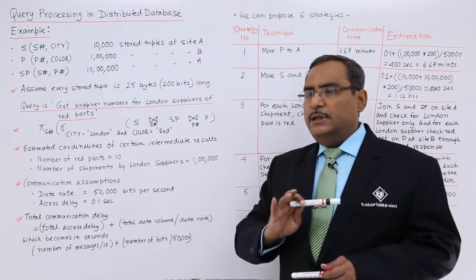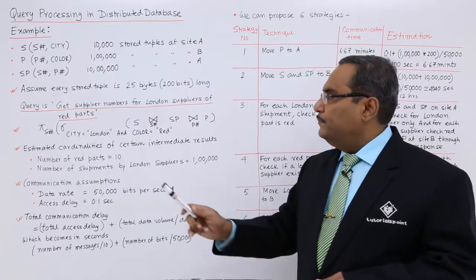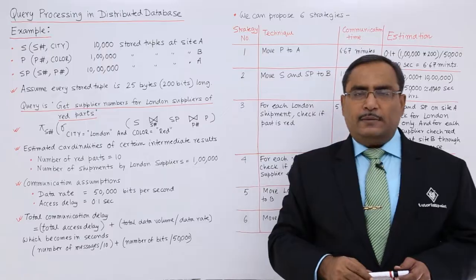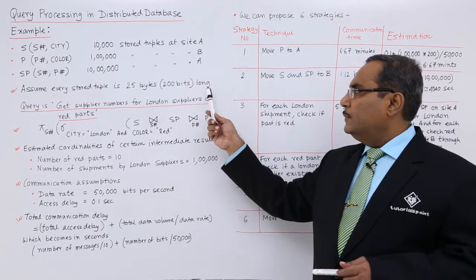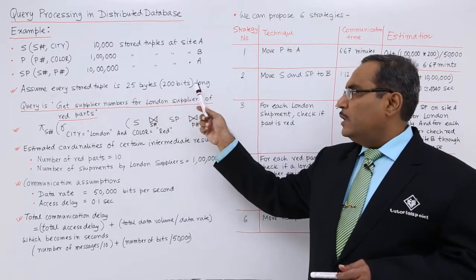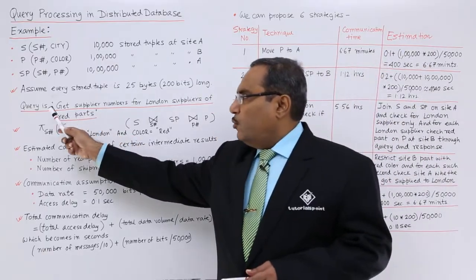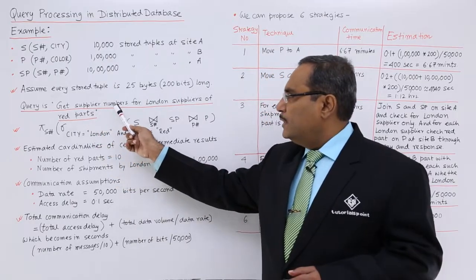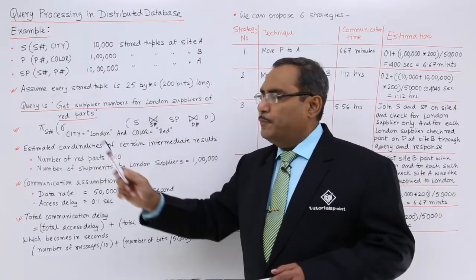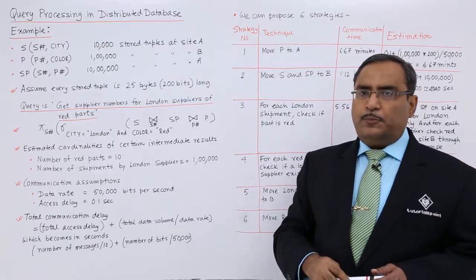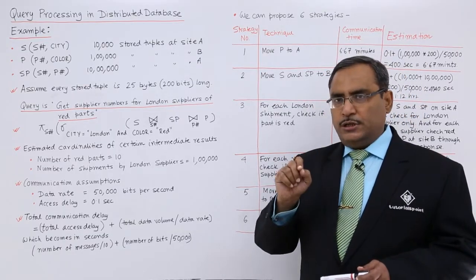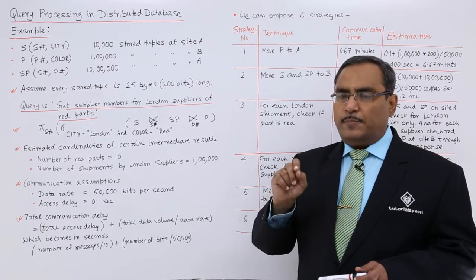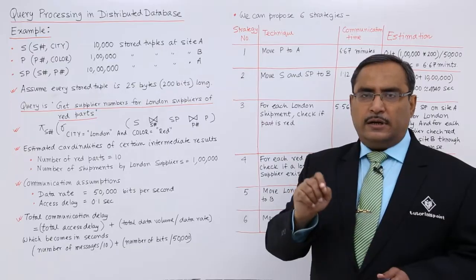We are having three tables distributed at site A and site B. Assume every stored tuple is 25 bytes long, that means 200 bits long (25 bytes × 8 = 200 bits). The query to be processed is: get the supplier number for London suppliers of red parts. That means we need to get the supplier number S# for those suppliers who are from the city London and supply red parts, i.e., part color is equal to red.